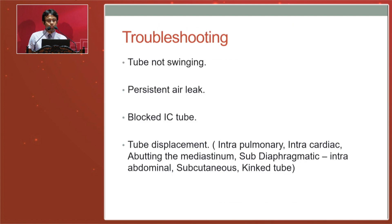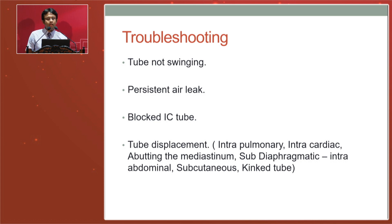Regarding troubleshooting, the most common problem is the tube not swinging. If the fluid level is not swinging, it may be because the lung has expanded and the drain has served its purpose. You should examine the patient, check x-rays, and if satisfied with lung expansion and there is no fluid, you can remove the drain.